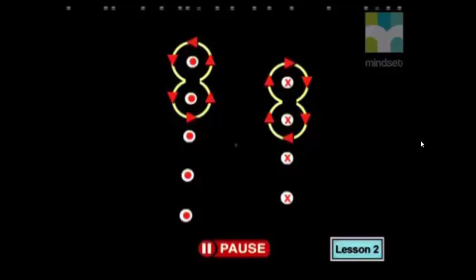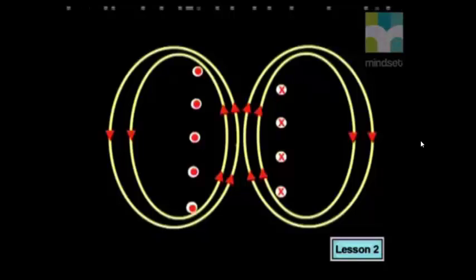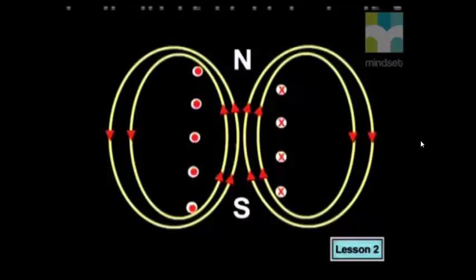Can you now draw a completed diagram of a solenoid? Overall, the field line pattern is the same as for a single loop. The magnetic field lines point in the same direction inside the coil and in the opposite direction outside the coil. We can label the end of the solenoid where the field lines leave the coil as the north pole and the other end as the south pole. This completes our diagram of the magnetic field around the solenoid.